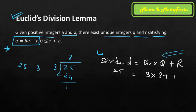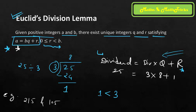Given two positive integers a and b, there exist unique integers q and r satisfying a = bq + r. The remainder has a minimum value of zero and is always less than the divisor — it cannot equal or exceed the divisor. So if I give you two numbers, say 215 and 105, you take 105 as the divisor and 215 as the dividend.